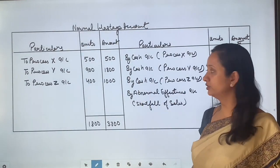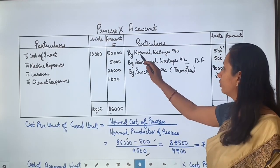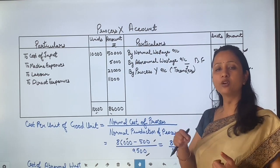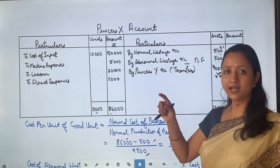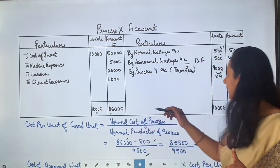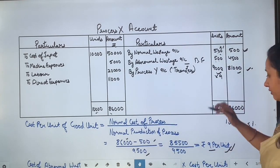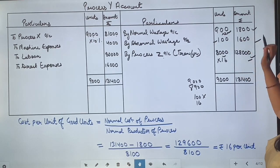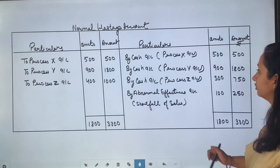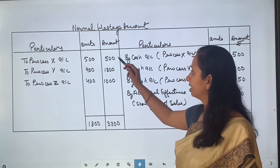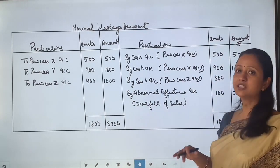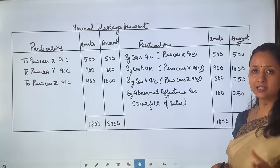Now the normal wastage account. The first entry is: Normal Wastage Account debit to Process X account — similarly for Process Y and Process Z. In the normal wastage account, entries from Process X are 500 units worth 500 rupees; from Process Y, 900 units worth 1,800 rupees; and from Process Z, 400 units worth 1,000 rupees.